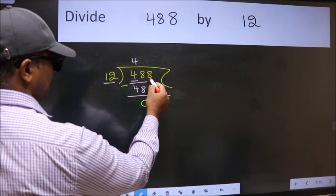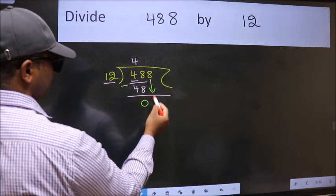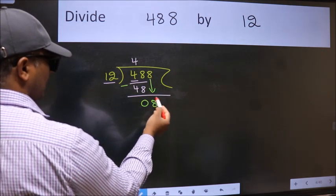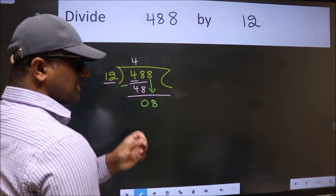After this, bring down the beside number. So, 8 down. After this step, the mistake happens.